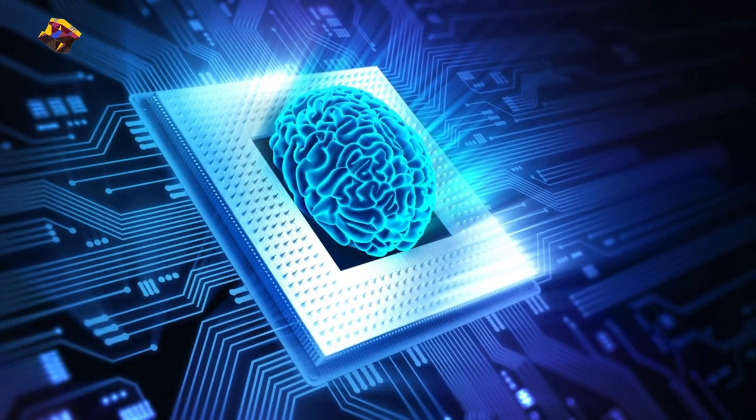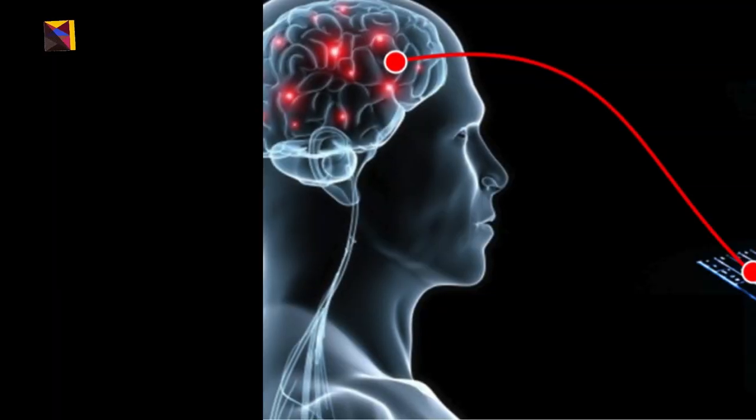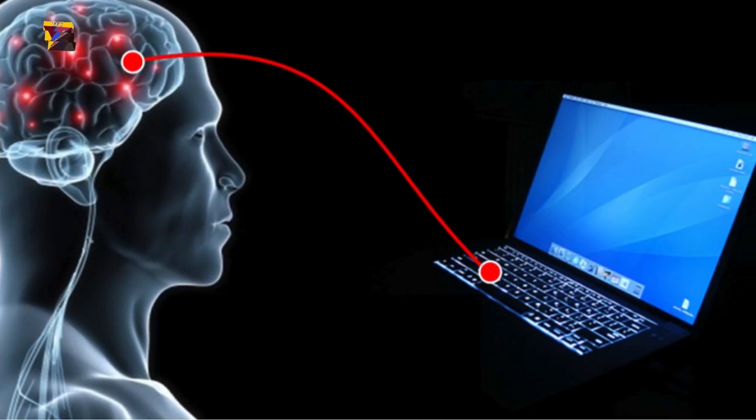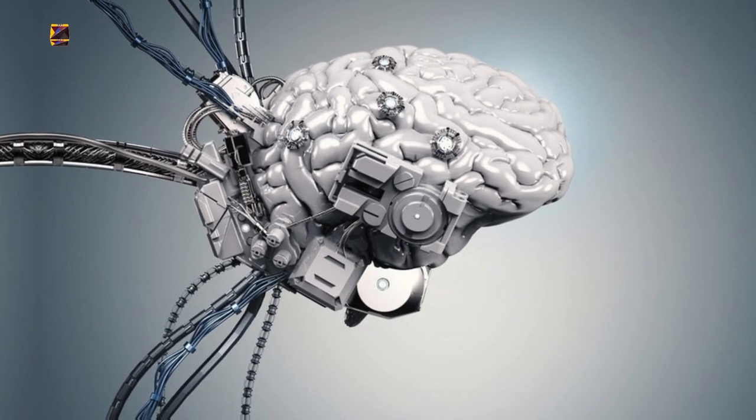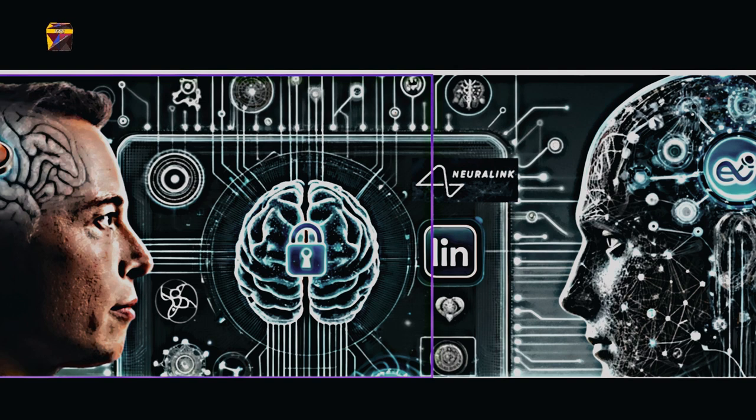The electrodes are connected to a small chip which can process brain signals and communicate with external devices wirelessly. The idea is to create a seamless interface between the brain and technology, allowing for direct control of computers and other devices by thought alone.